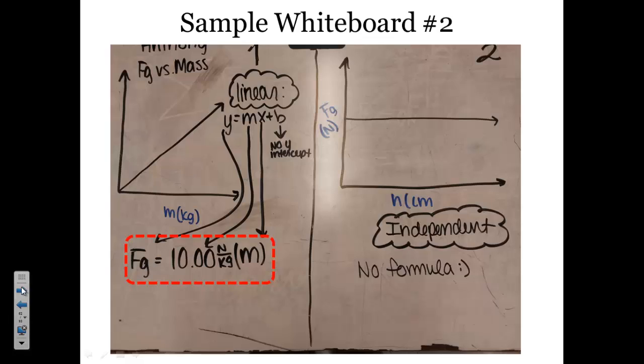Here's another sample whiteboard. Also showing a linear relationship between force and mass and an independent relationship between the height of the object and the force. This group got a slope of 10 newtons per kilogram.